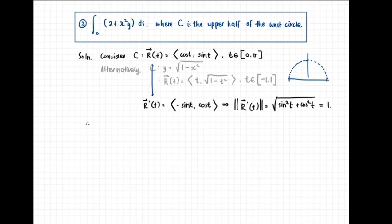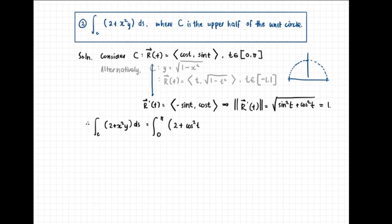To compute the integral over c of 2 plus x squared y with respect to arc length s, we integrate from 0 to pi. Replacing x by cosine t and y by sine t gives: 2 plus cosine squared t times sine t, and ds is replaced by the norm of r prime, which is 1, times dt. So the integral becomes the integral from 0 to pi of 2 plus cosine squared t sine t dt.